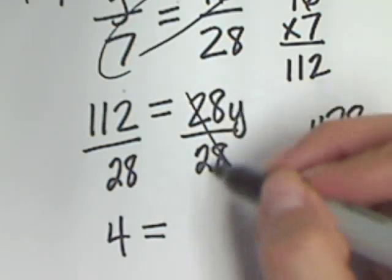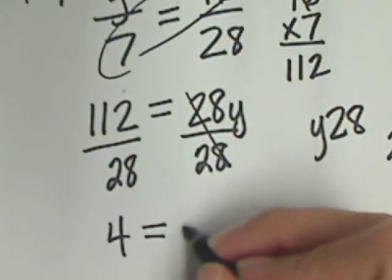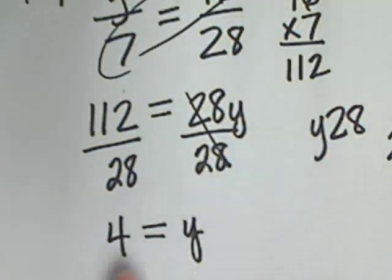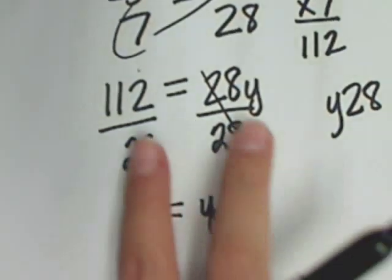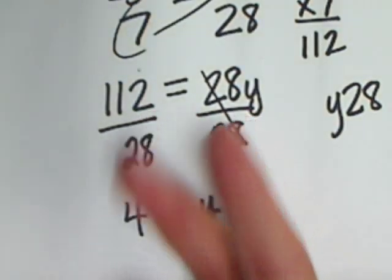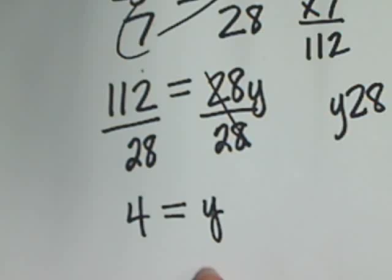28 over 28 is just 1. They cancel each other out. You have 1y. So, 4 equals y. Or, you could have had these switched, and it would have been y equals 4. Same answer.